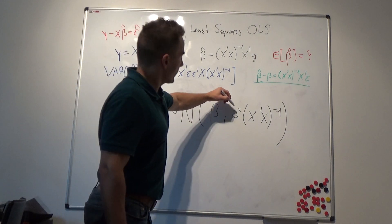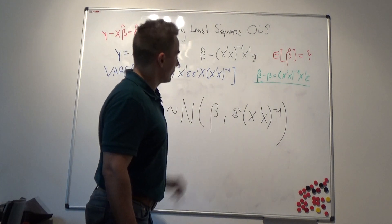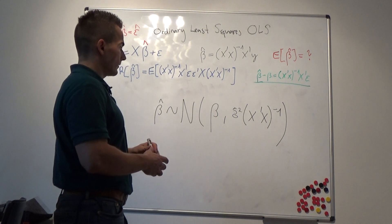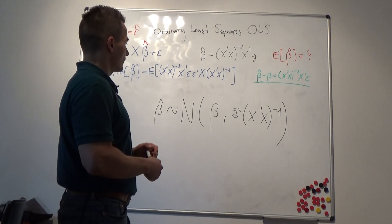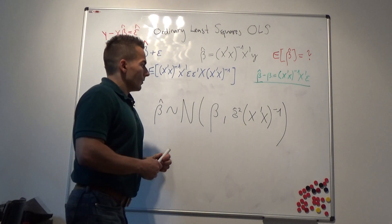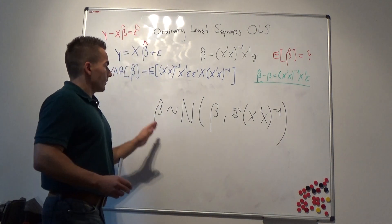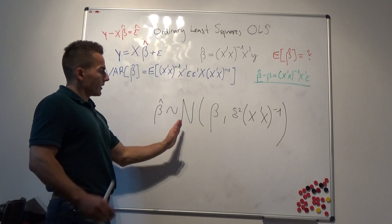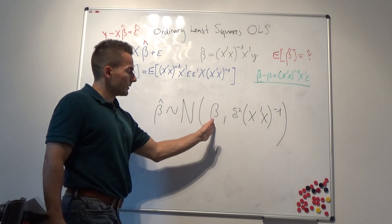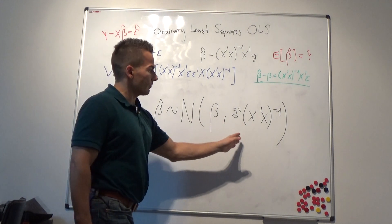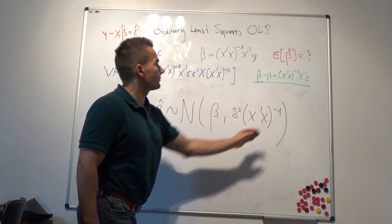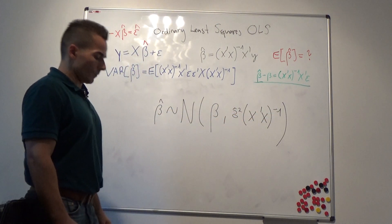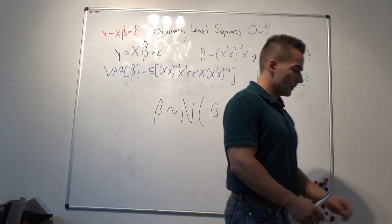And this guy here is also estimated. So our point estimator is multivariate normally distributed with expectation of beta and variance-covariance matrix defined as here. That's an important result.